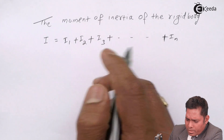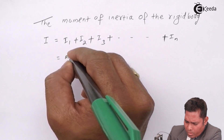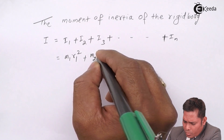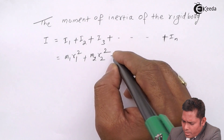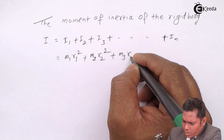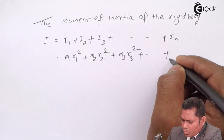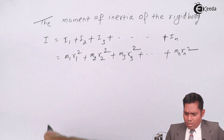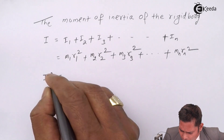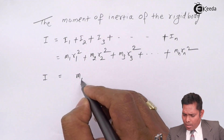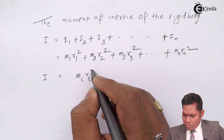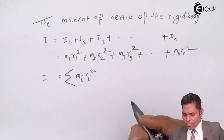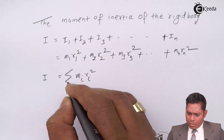If I write the moment of inertia for individual particles: particle 1 gives M1 R1 squared, particle 2 gives M2 R2 squared, particle 3 gives M3 R3 squared, and so on up to Mn Rn squared. This can be written compactly as the summation of Mi Ri squared.